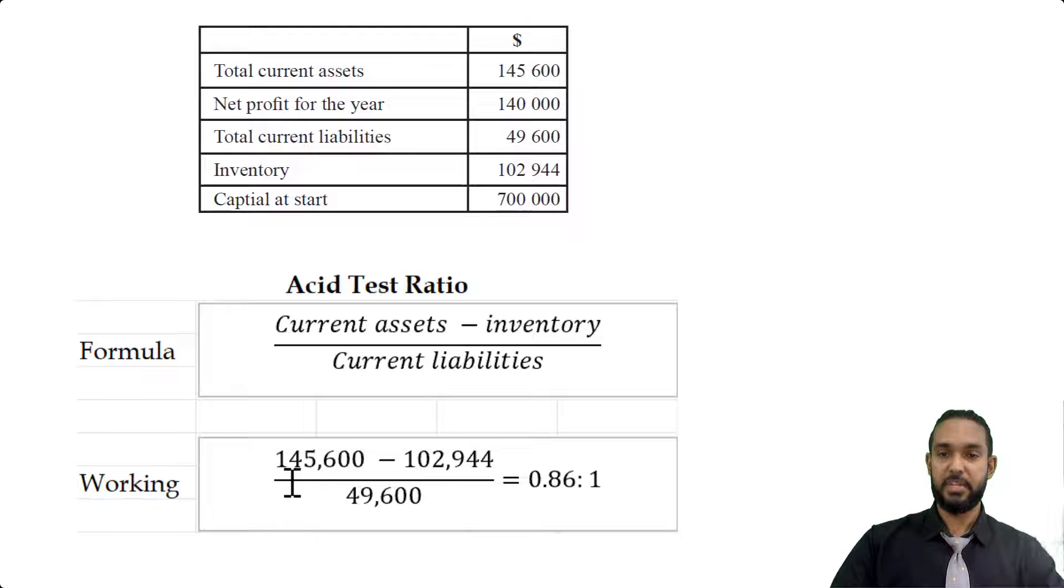So if we take a look at the working, we're seeing 145.600 minus 102.944, which is current assets minus the inventory divided by current liabilities. And that gives us 0.86 to one. So what that means is we only have $86 worth of current assets, excluding stock, to pay off every dollar of current liability. So we aren't liquid, we are actually in a kind of deficit position.